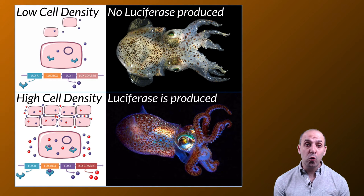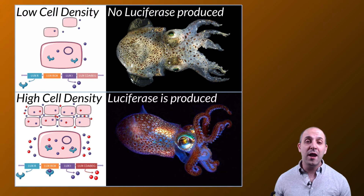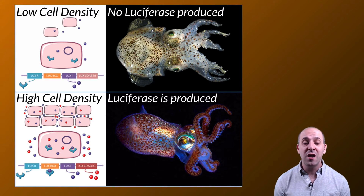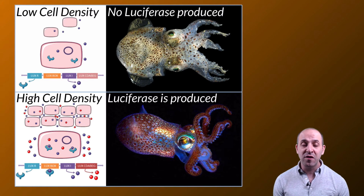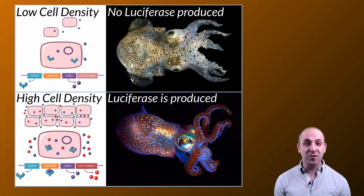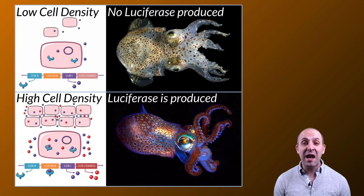It's a super cool behavior worth knowing about just because of the ecology of it, but it's also an important demonstration of the notion that cellular communication predates multicellular organisms. Prokaryotic cells can absolutely communicate with each other through mechanisms like this quorum sensing pathway and use it to coordinate the behavior of a population of cells.